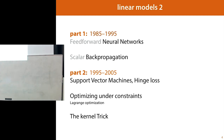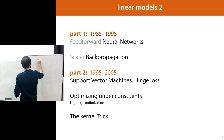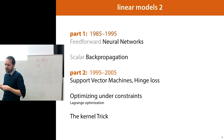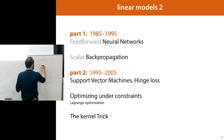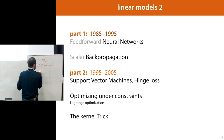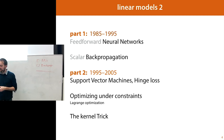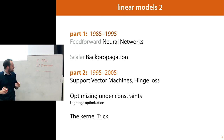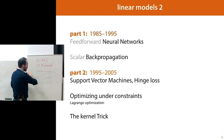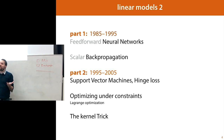So this is the plan. We'll start with neural networks and explain what the model looks like — it's relatively simple. Then we'll look at backpropagation, which is one method we need to train these models that are slightly deeper and more complex than the one-layer linear models we've seen so far. That's all we'll say about neural networks today, but next week we'll continue with deep learning. Then we'll talk about support vector machines.